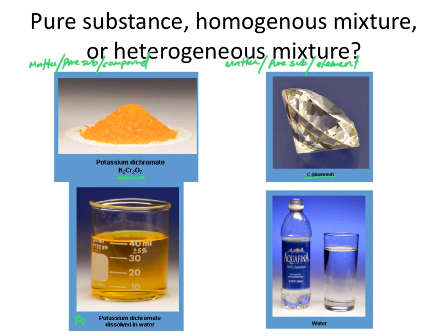Now here is another example: potassium dichromate dissolved in water. We've taken this solid and put it together with water. That's going to fall into the matter category. Because there's more than one thing there, it's going to be a mixture. Is it uniform in composition? It is uniform in composition, and if you look at it, you can actually see through it — so we know this is going to be a homogeneous mixture.